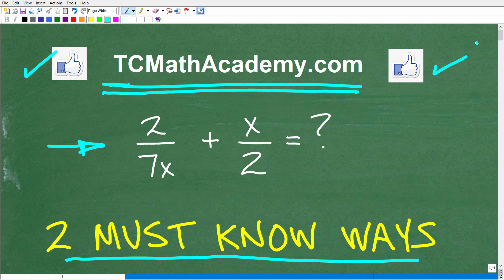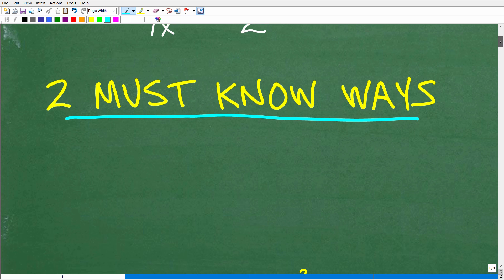Okay. So again, the problem here is two over seven X plus X over two. We're trying to add these rational expressions or fractions that have variables. What is the answer? Well, let's go ahead and take a look at that right now.